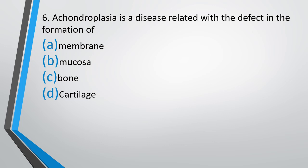Question 6. Achondroplasia is a disease related with defect in formation of: membrane, mucosa, bone, or cartilage? The correct answer is option D — achondroplasia is related with cartilage. The name itself reveals it: 'chondro' means cartilage, 'plasia' means development, and 'a' means absent — so there is absence of cartilage development.